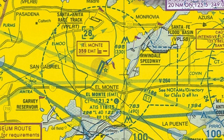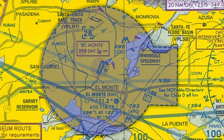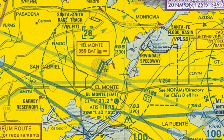One thing to remember about controlled airports is that they have an airspace around them — it's going to be either Class Delta, Charlie, or Bravo. El Monte happens to be a Class Delta airspace, and as long as you're inside that airspace the tower will control you in VFR conditions. As soon as you leave that airspace, whether away from it or above it, the tower will give you a frequency change.